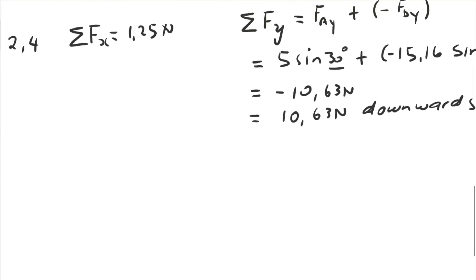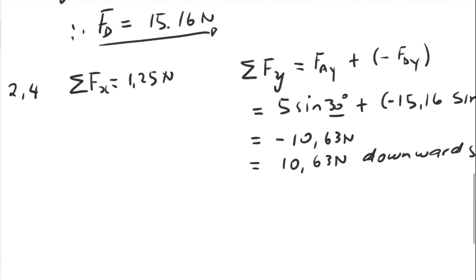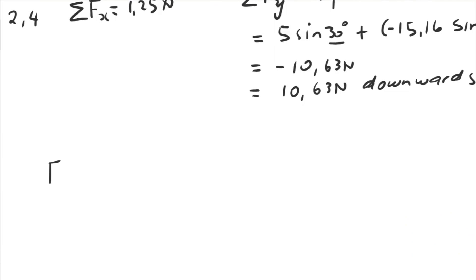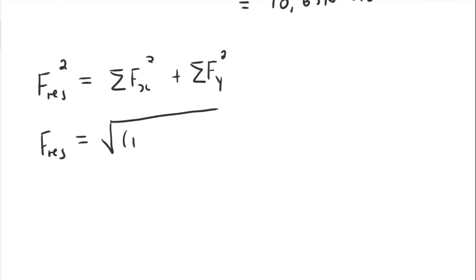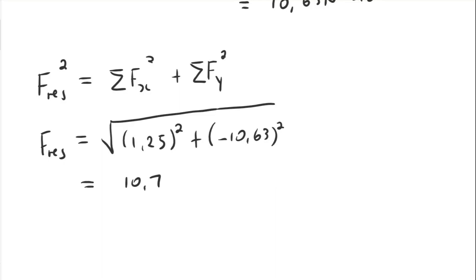Now we have both components. Applying the Pythagorean theorem: the resultant force squared equals sigma Fx squared plus sigma Fy squared. Therefore the resultant F equals the square root of (1.25² + (−10.63)²), which works out to 10.70 newtons.